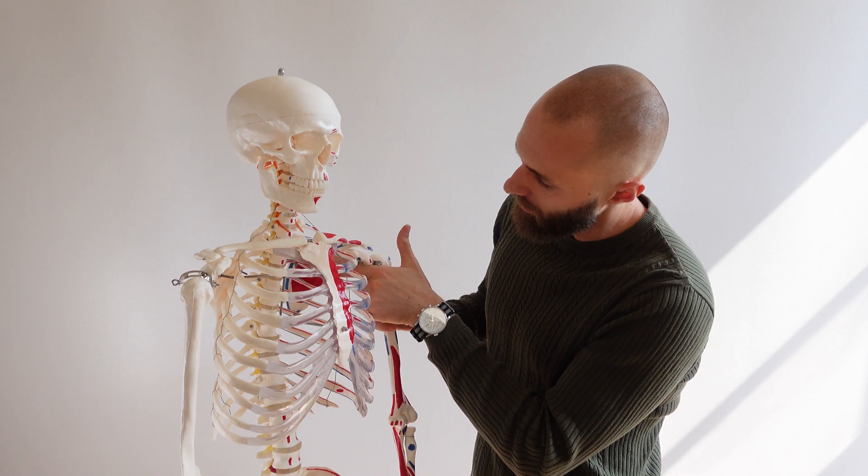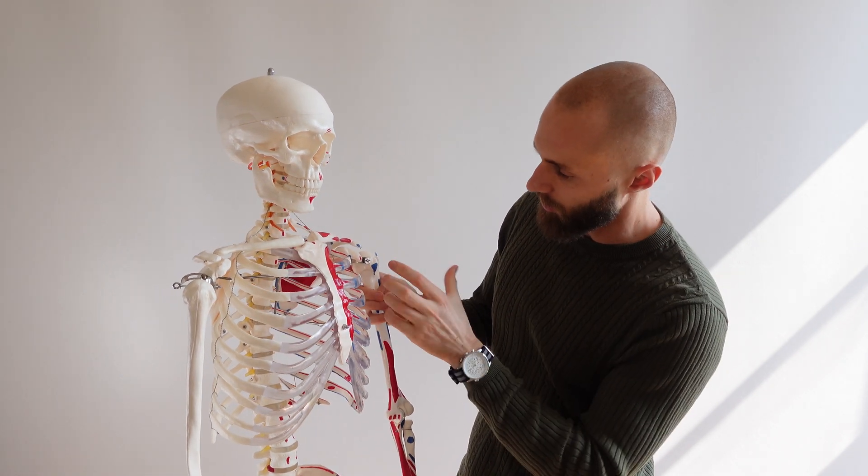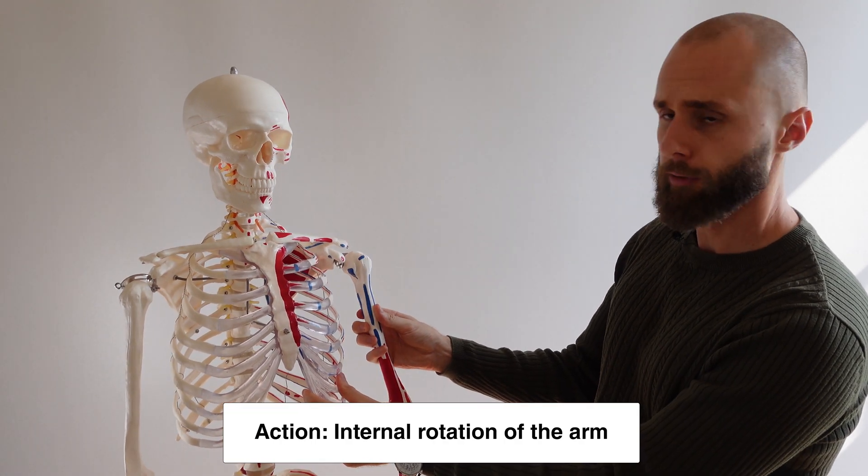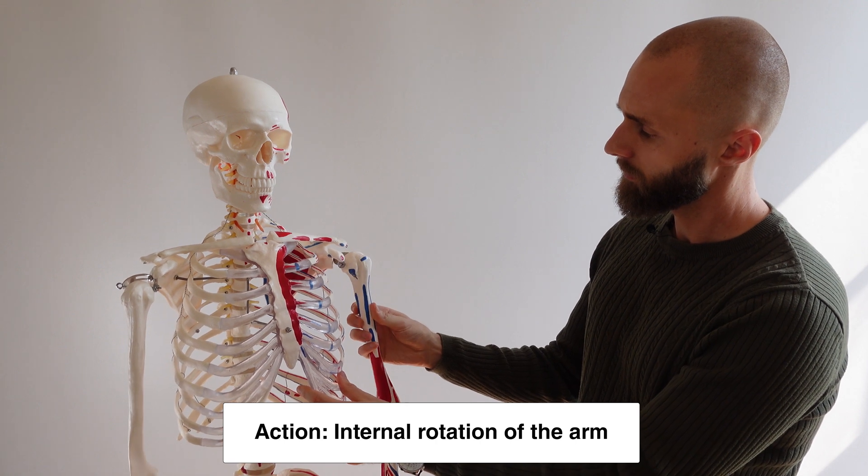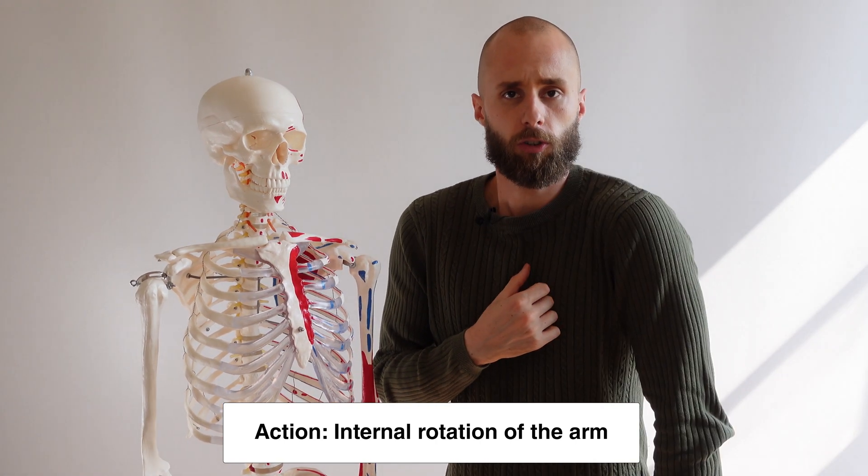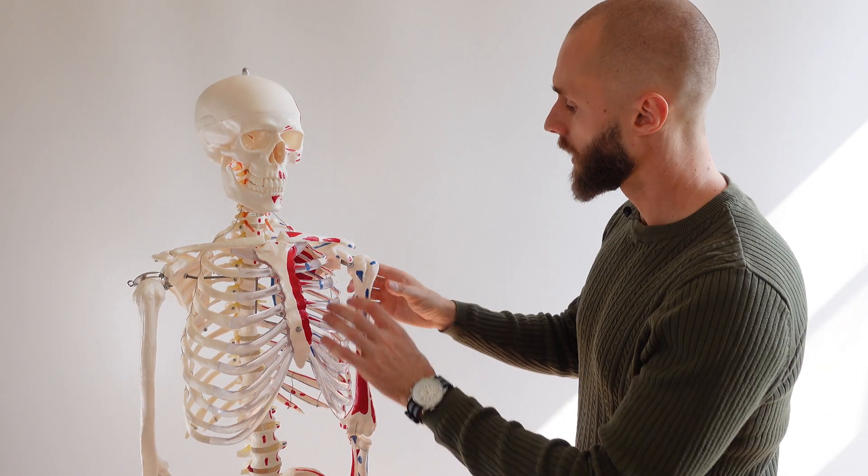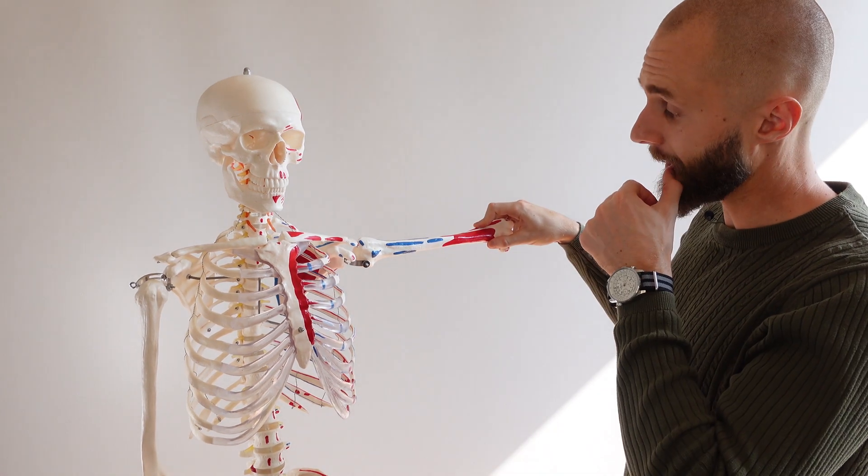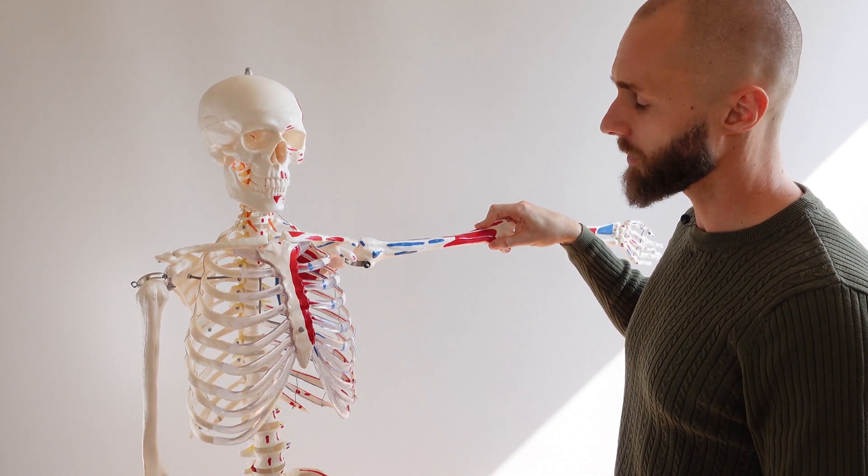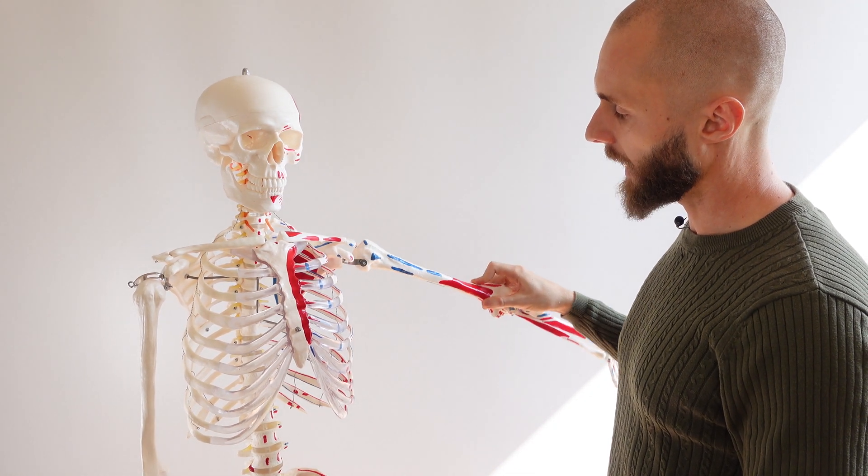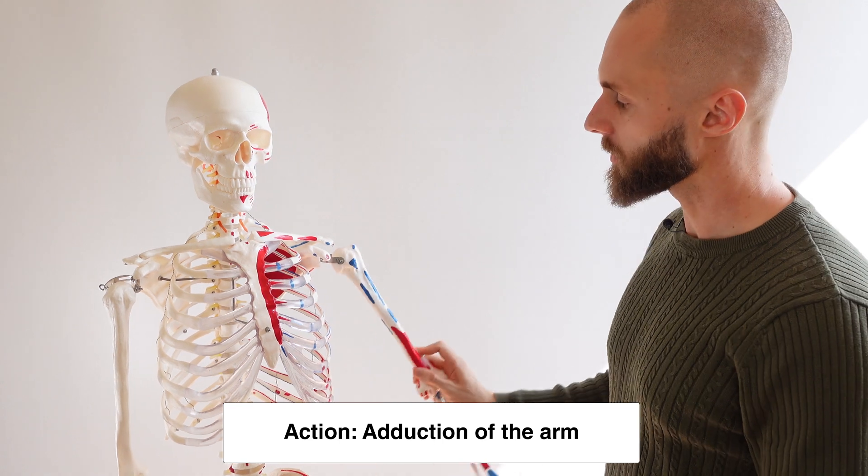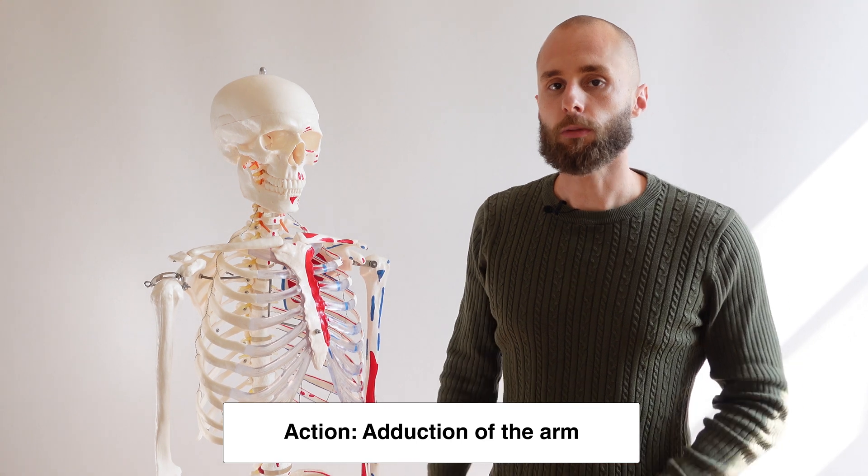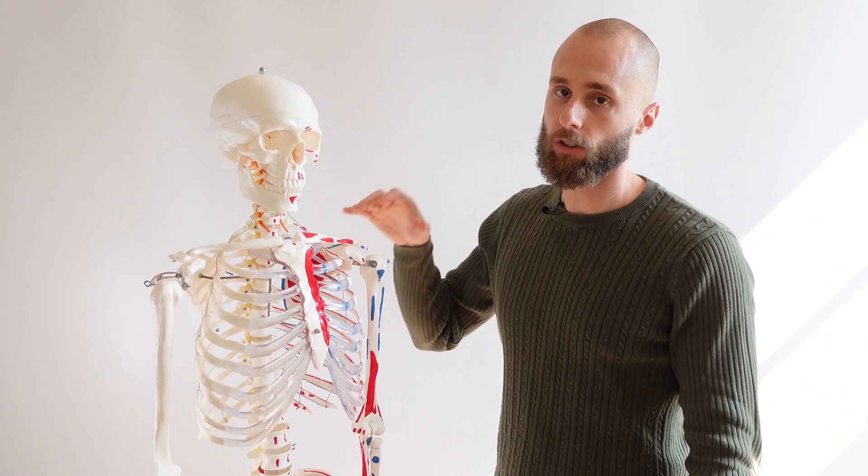If you imagine the subscapularis connecting these two and squeezing together, it's going to internally rotate the humerus. You can see internal rotation, and if the humerus is abducted, it's going to adduct it as it flexes. So we've got adduction and internal rotation.